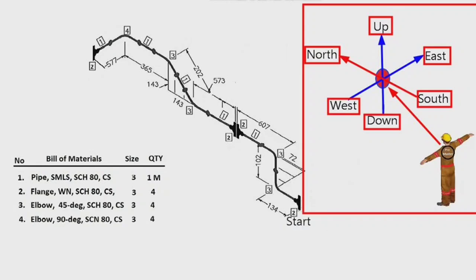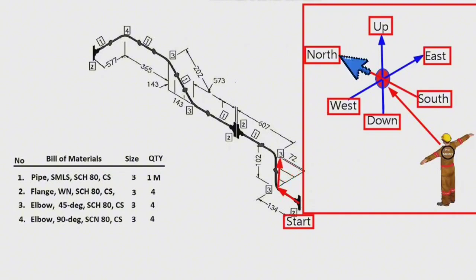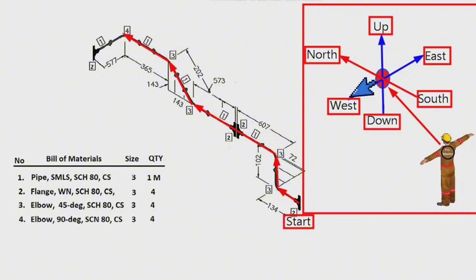Let's start reading the drawing from this starting point. The pipeline starts moving in the north direction at this starting point. The pipeline continues its movement first to the east and then to the north horizontally at an angle of 45 degrees along the dashed lines. The pipeline continues to move north. The pipeline here rises vertically at an angle of 45 degrees along the dashed lines. The pipeline continues to move north again. The pipeline here turns to the west at an angle of 90 degrees. So the correct reading of the pipe drawing is completed.